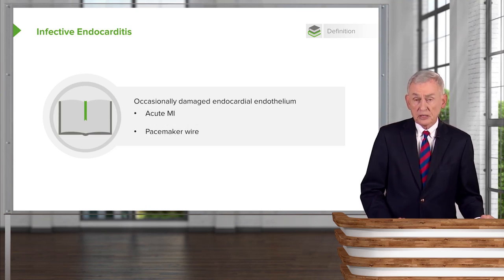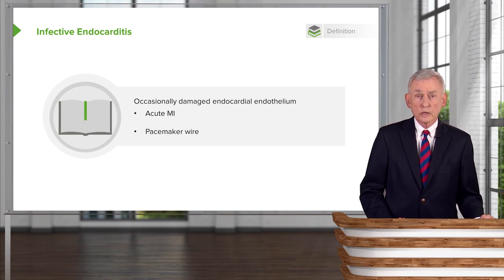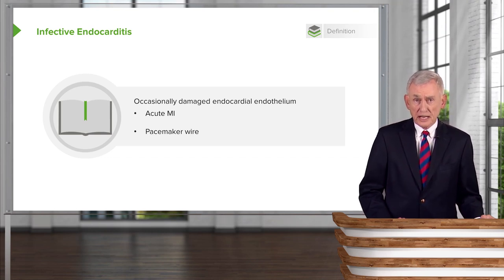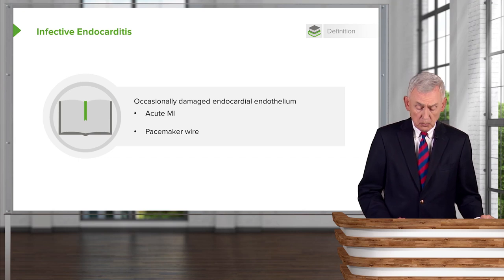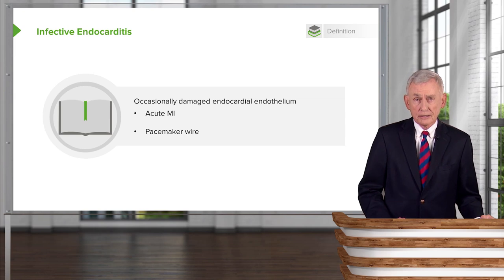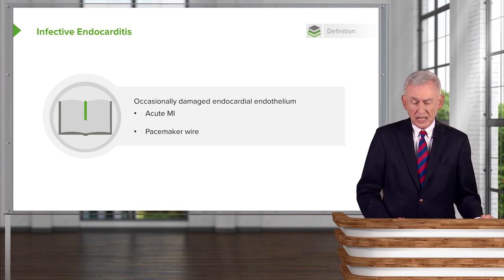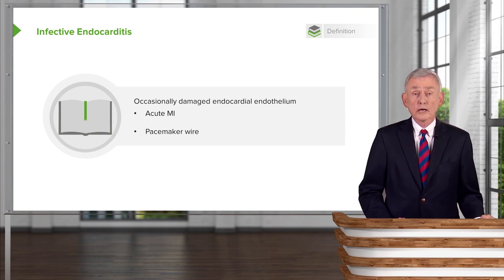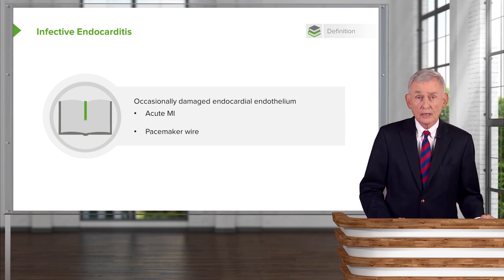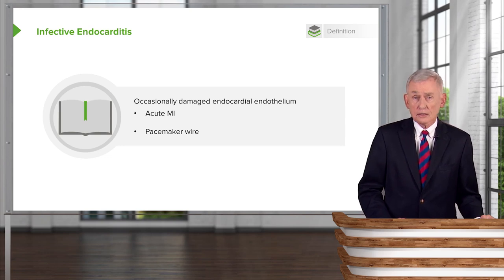Occasionally it's from a damaged endocardial surface. There have been cases of endocarditis following an acute myocardial infarction where the vegetations are found on the damaged heart muscle. Many patients nowadays have pacemakers, and so you can get an infection related to a pacemaker wire that sheds organisms into the bloodstream and causes something very similar to a valvular infection.